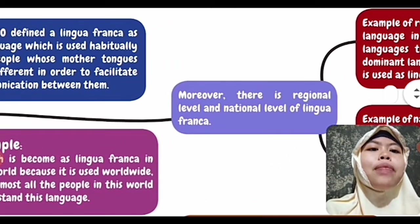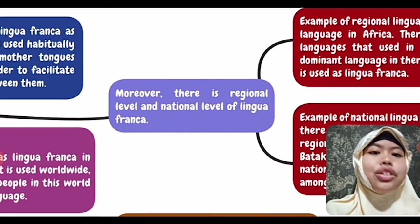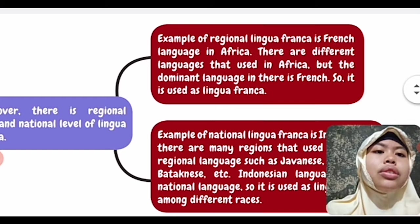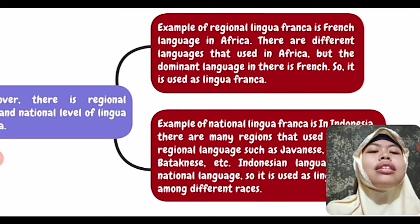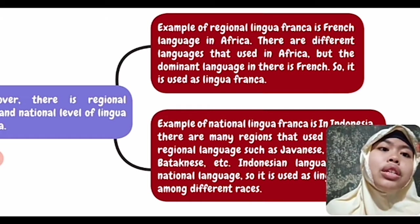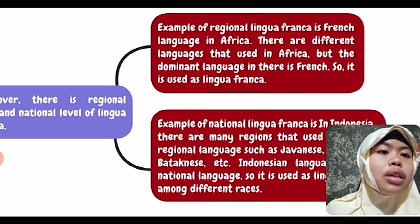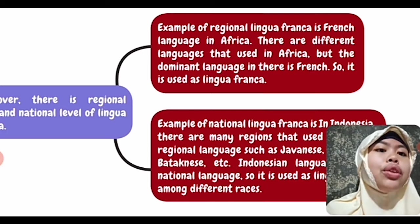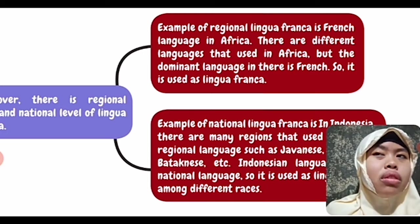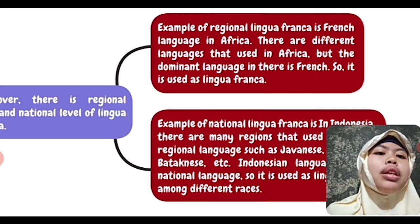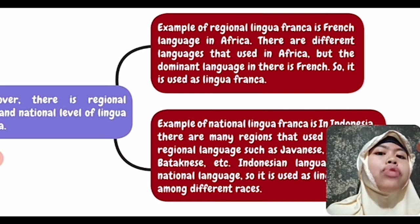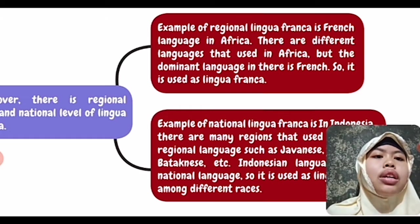Next, about the regional level and national level of Lingua Franca. For regional Lingua Franca, the first example is French in Africa. In Africa there are many different languages, but the dominant language there is French, so it is used as Lingua Franca. In Africa there are so many separate states, but the dominant language used across Africa is French, so the Lingua Franca at the regional level in Africa is French.